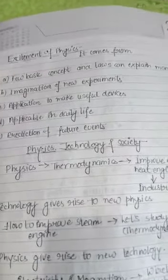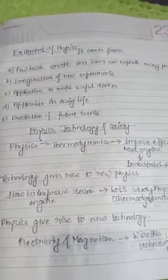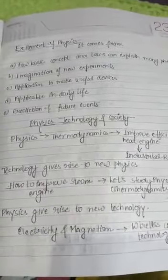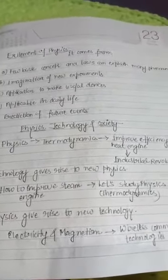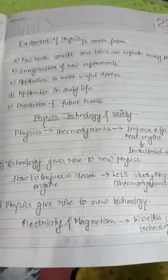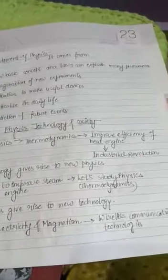Now the next thing is physics, technology and society. Technology gives rise to new physics, like how to improve steam engine that we can study from physics only. Physics gives rise to new technology, like with the help of electricity and magnetism we developed wireless communication technologies.